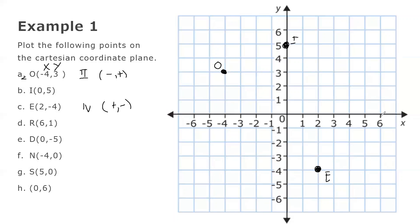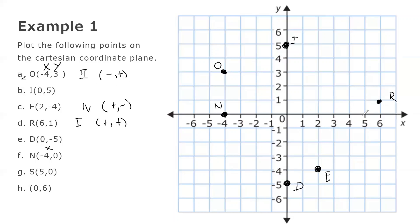Point R is at (6, 1) — x is 6 and y is 1 — so point R is in Quadrant 1, where x is positive and y is positive. Point D is at (0, negative 5), plotted on the negative y-axis. Point N is at (negative 4, 0), plotted on the negative x-axis. Point S is at (5, 0), plotted on the positive x-axis.